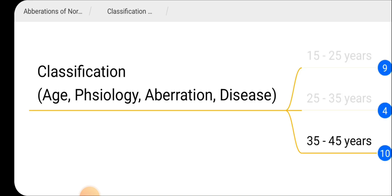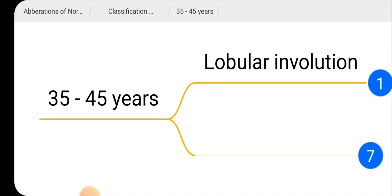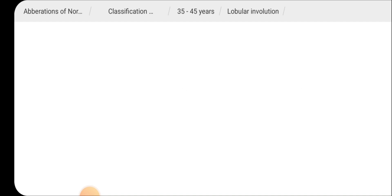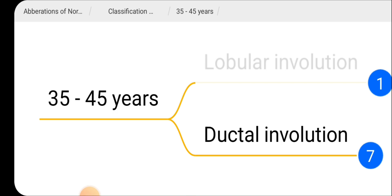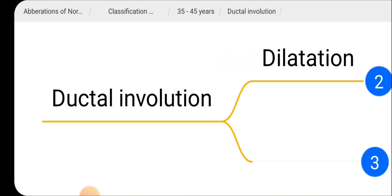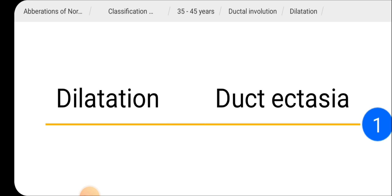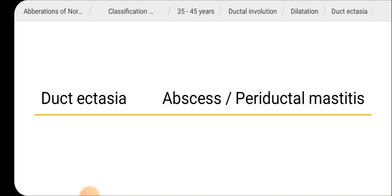For the age group 35 to 45 years, there can be either lobular involution or ductal involution. The aberration caused by lobular involution is cysts — breast cysts. With ductal involution, dilatation can occur, and the aberration caused by dilatation is duct ectasia, which may predispose to breast abscess or periductal mastitis.